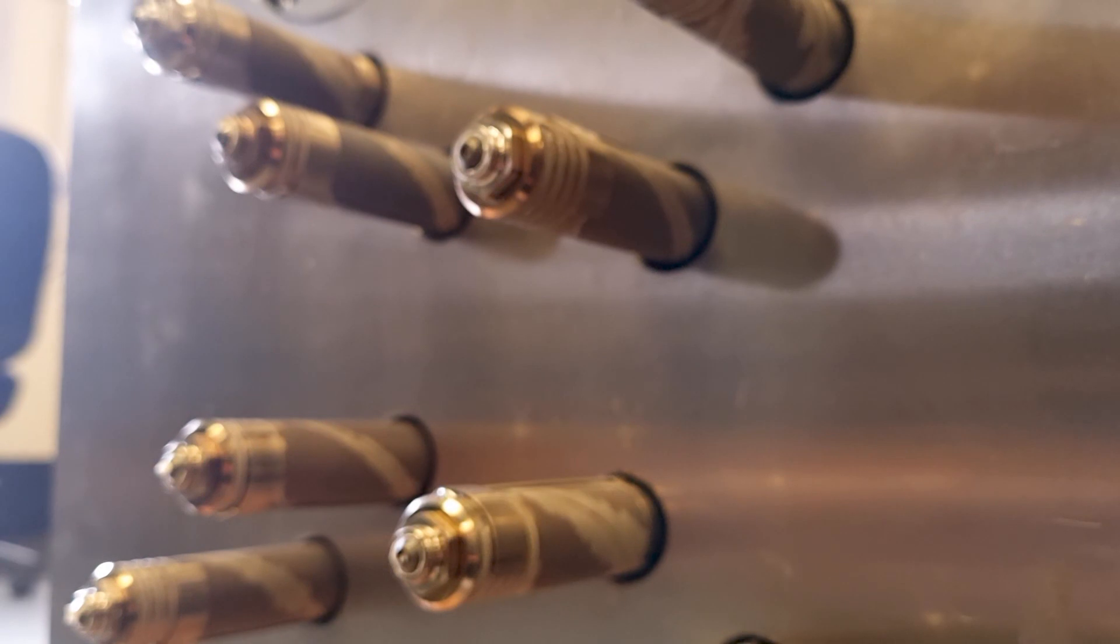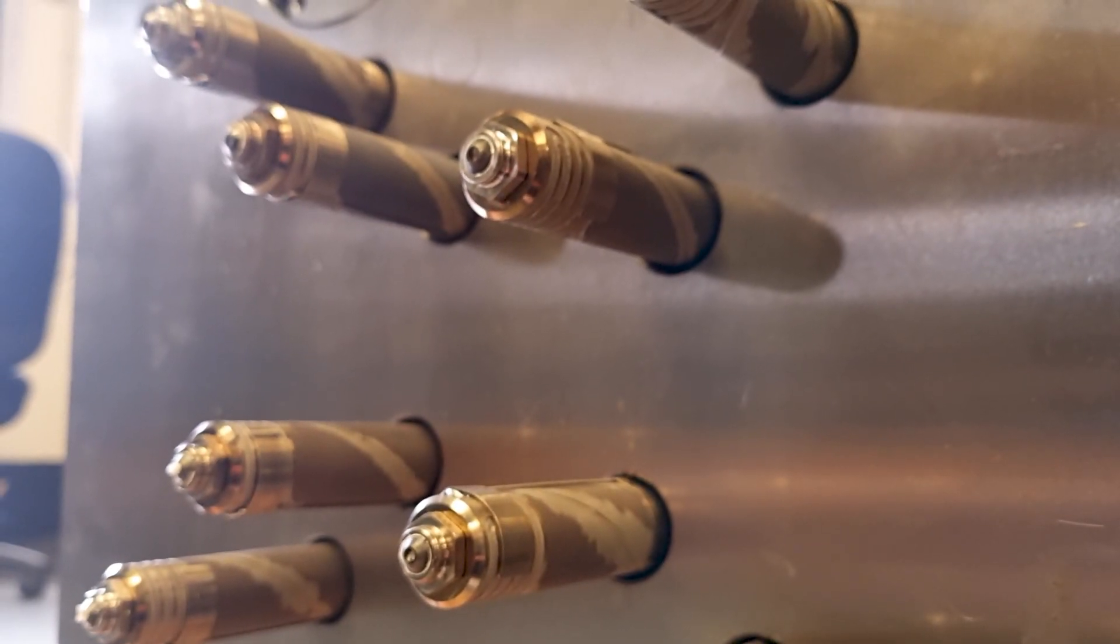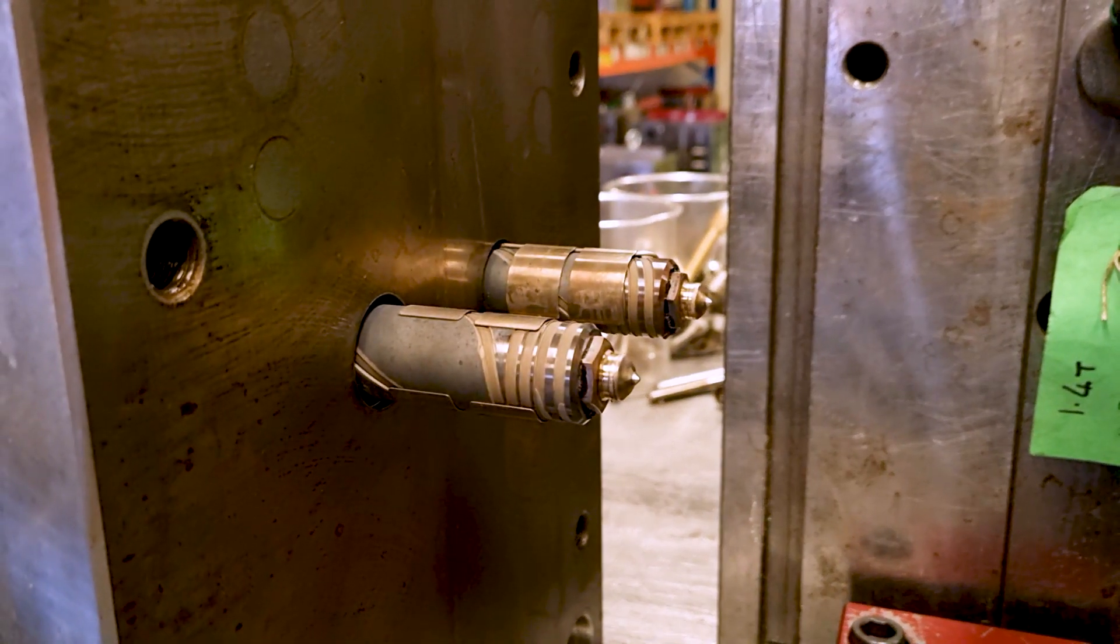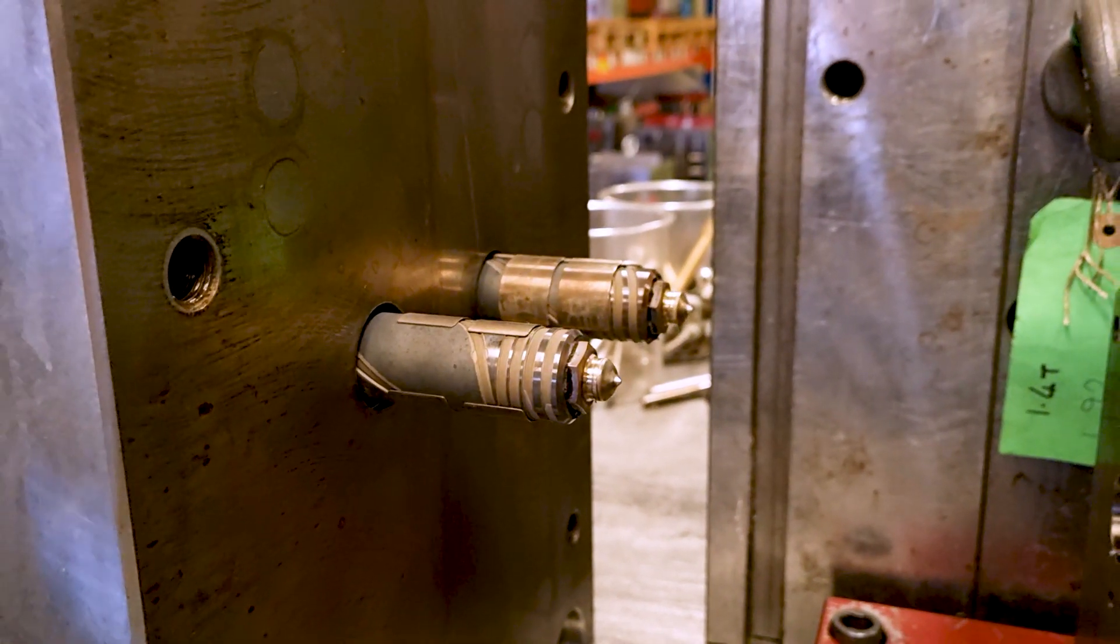The runners allow for the molten polymer to reach the core and cavity of the mold tool. These can be hot or cold depending on the setup of the tool. Hot runners are more expensive but offer more leeway with gate positions when designing the tool.